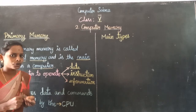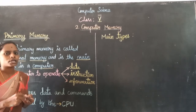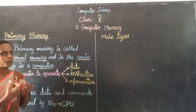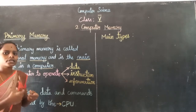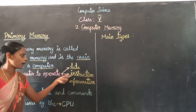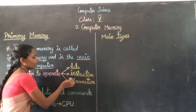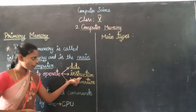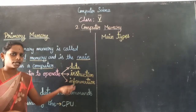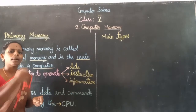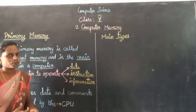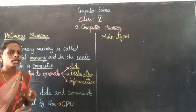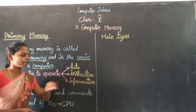We store data, instructions, and information in primary memory. Data: what do we store? Instructions: what do we store? Information: how to display the information on output and display — this is the information stored in memory.